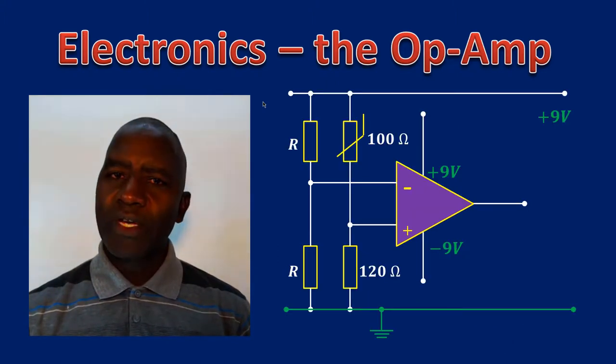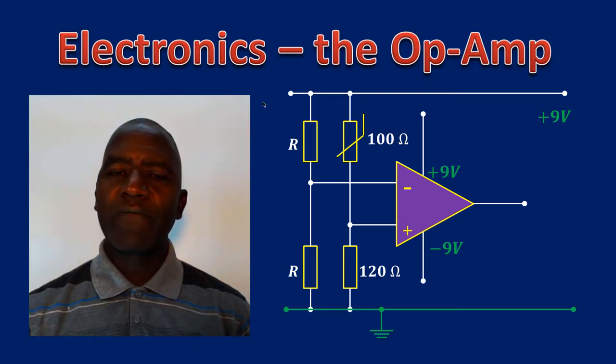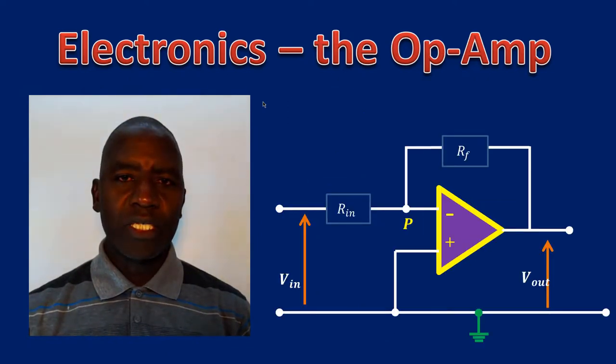Now why have I chosen this topic over the others? Electronics is one of the topics students find very challenging. At this level, Electronics mainly deals with the Operational Amplifier.